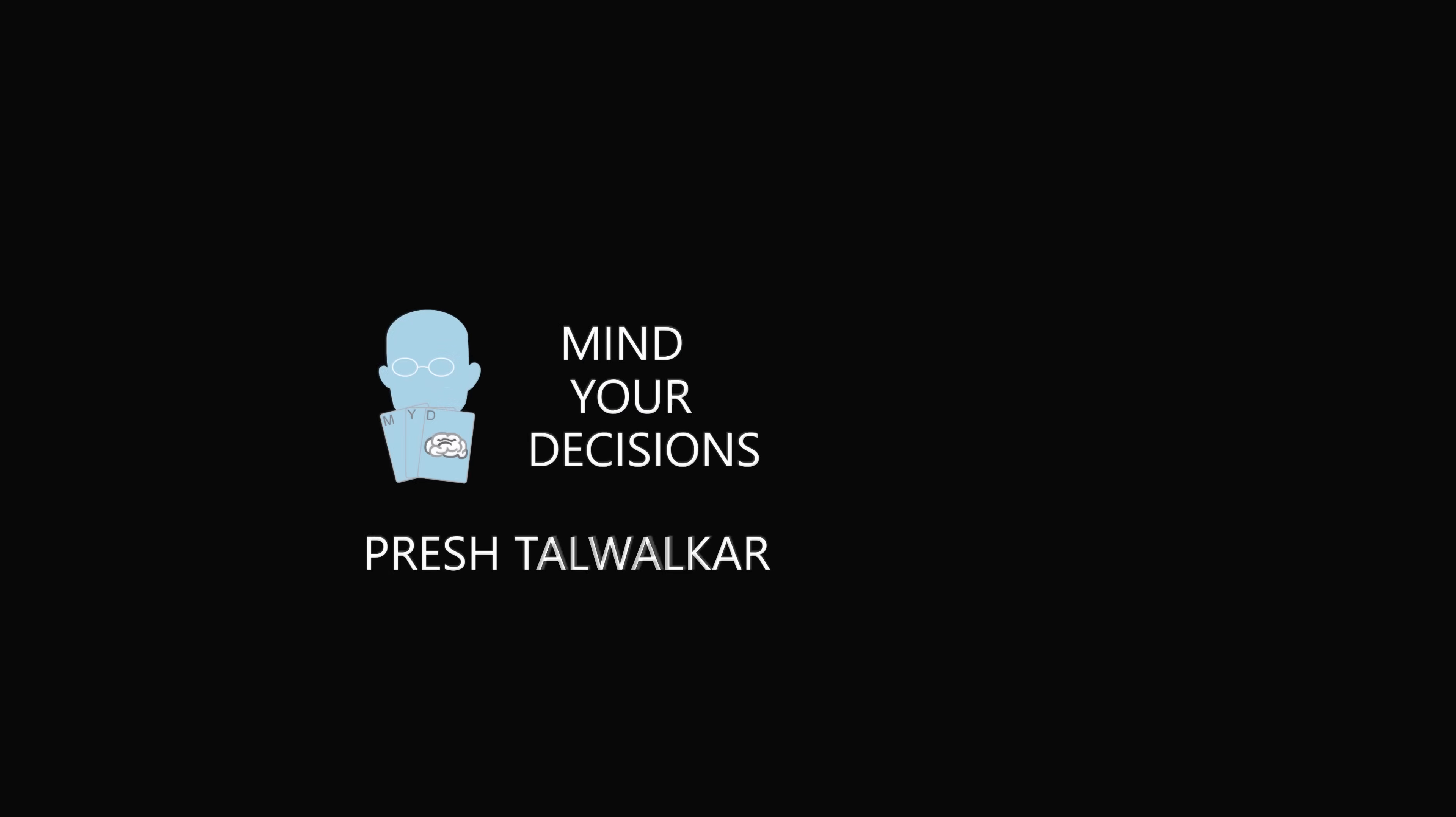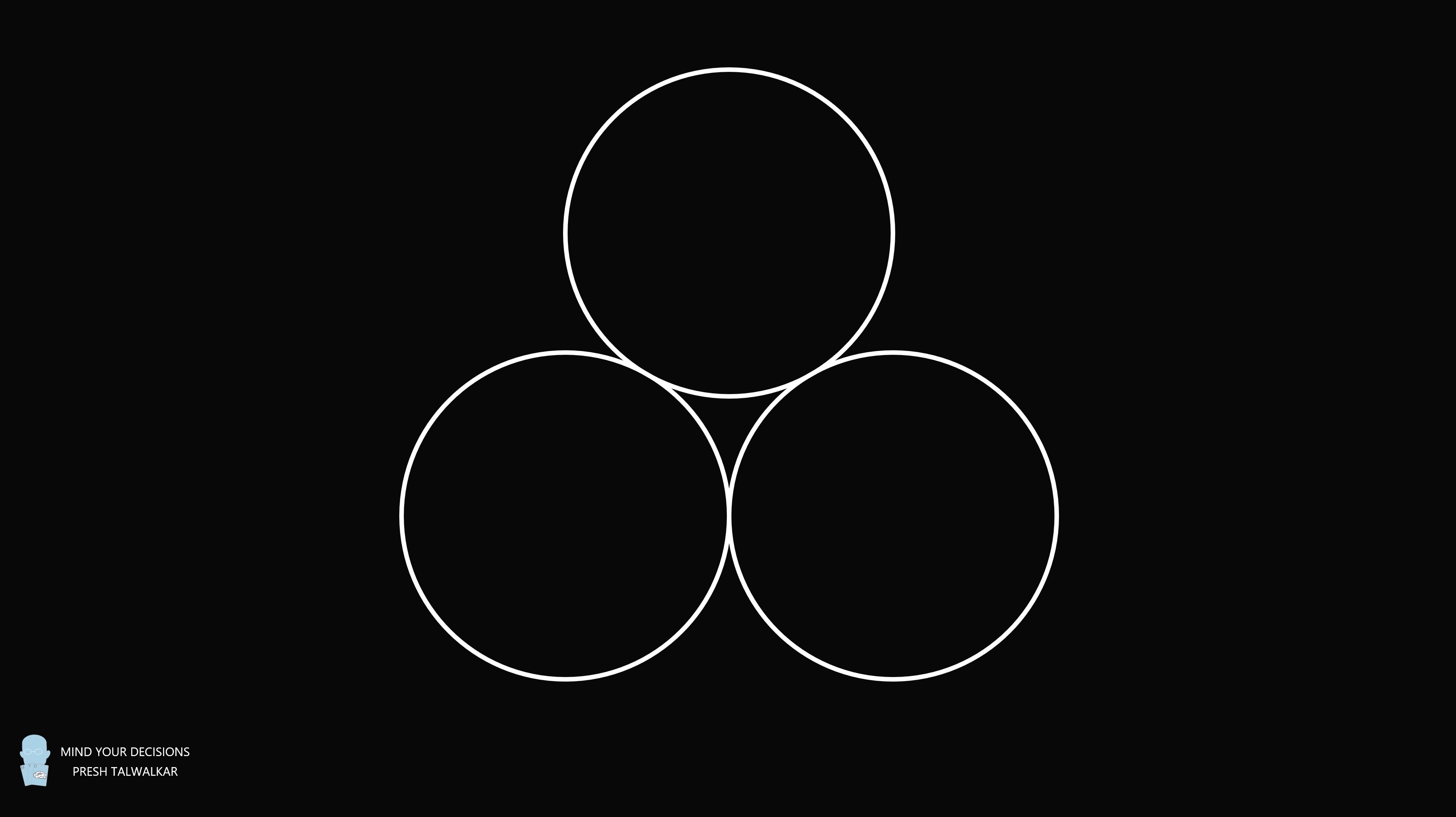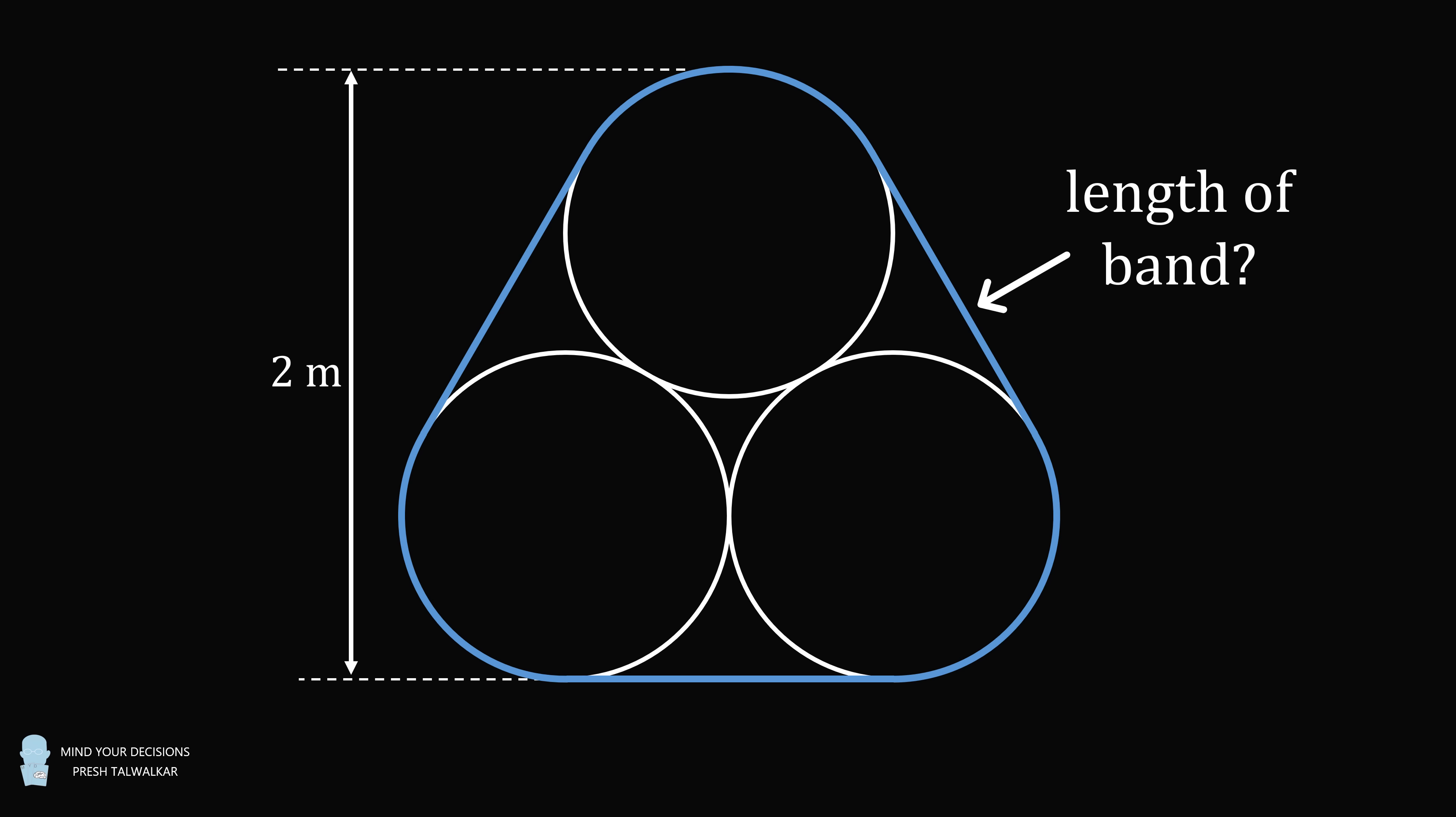Hey, this is Presh Talwalkar. Here's a fun geometry problem. Three circles of equal size are placed in a triangular shape and they are pairwise tangent. An elastic band is placed around the three circles. The height from the top of the top circle to the bottom of the bottom two circles is exactly 2 meters. The question is what is the length of the elastic band?